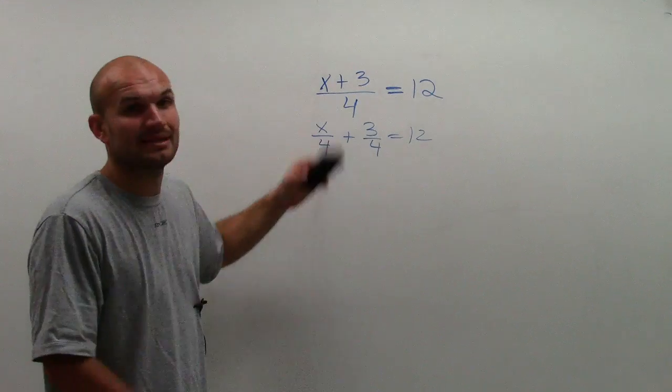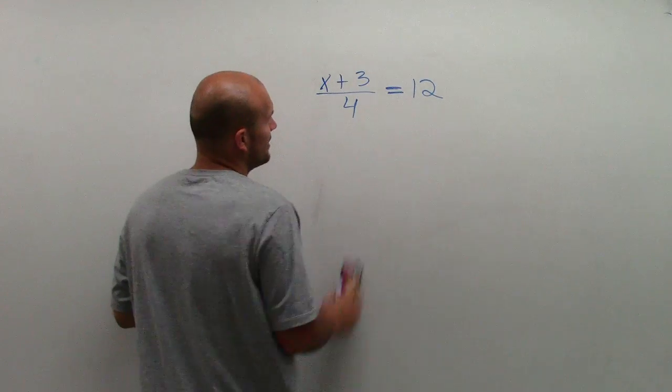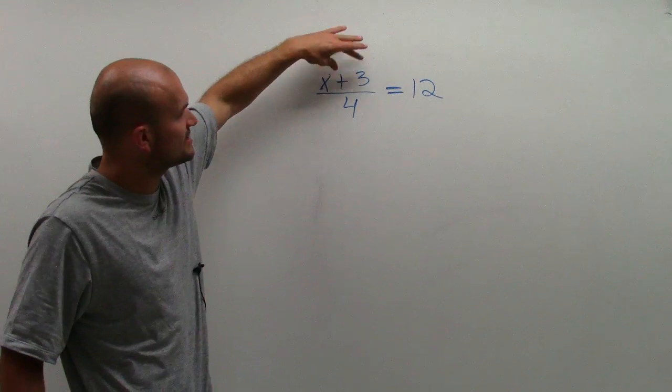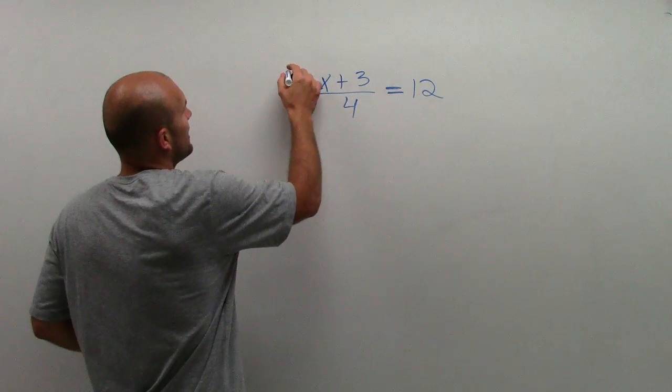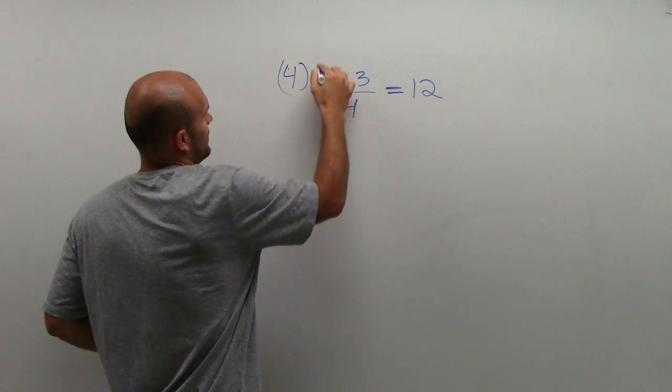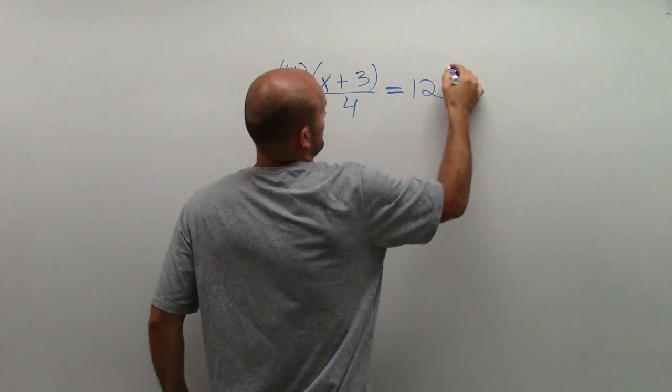Well, that's the exact same thing that you can do up here. Because look, I'm taking these two terms, and they're being divided by 4. So to undo divided by 4, I'm going to multiply by 4.